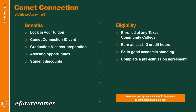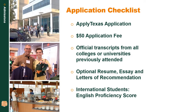To be eligible for this program, you just need to be a currently enrolled student at any Texas Community College with at least 12 credit hours. You need to be in good academic standing and complete the pre-admission agreement, which you can find at utdallas.edu/connect. Once you have that pre-admission form filled out and signed, you can email it to admission@utdallas.edu and we will get you signed up.